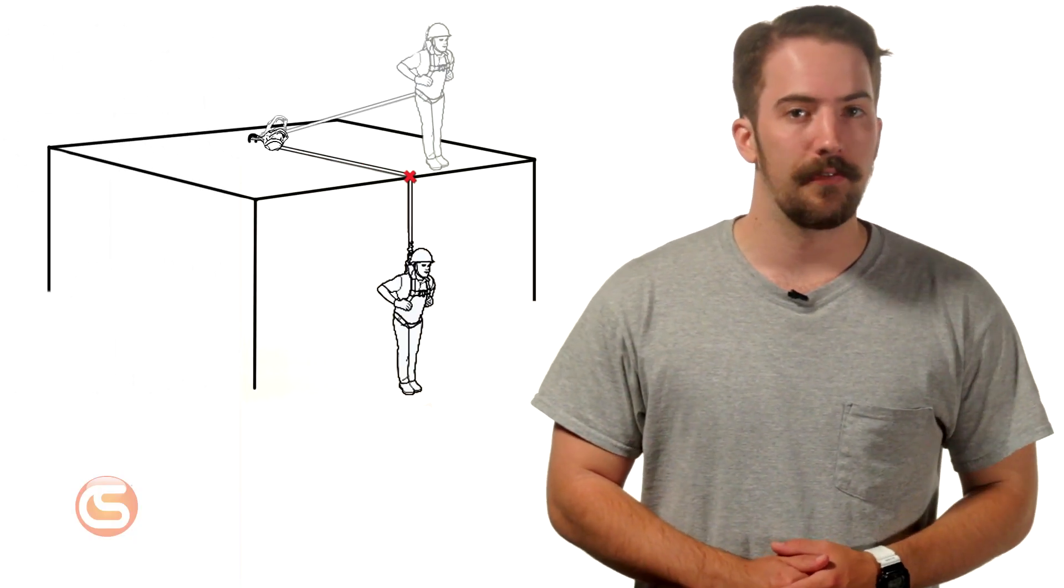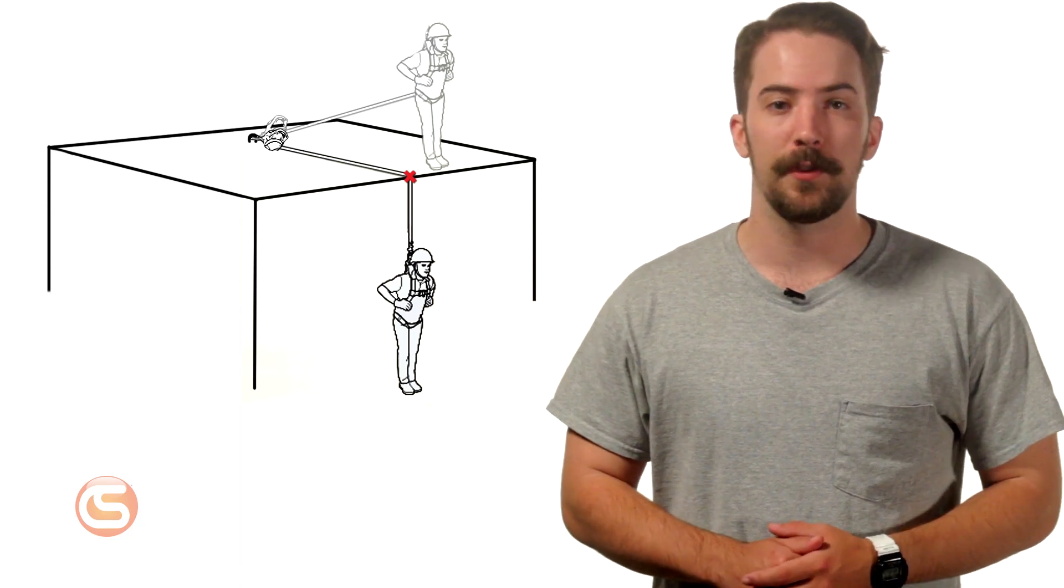This typically involves a worker being tied off at foot level and progressively working further and further away from the anchor. This in turn affects the amount of fall clearance that should be calculated. Click right there to learn more about fall clearances.